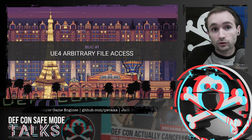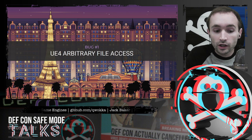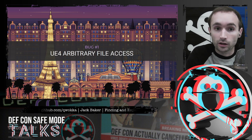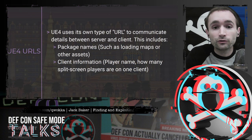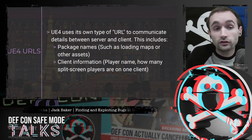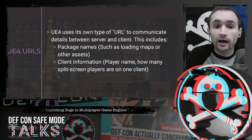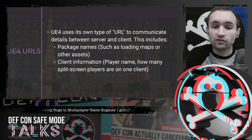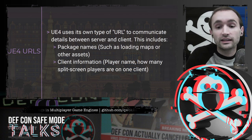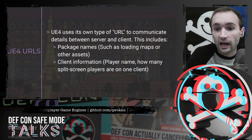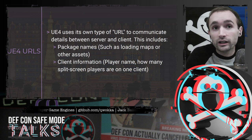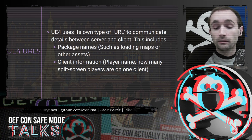Now let's look at our first bug — an Unreal Engine 4 file pathing bug. Unreal Engine uses its own type of URL to communicate details between server and client. This can include things like the server saying 'we're playing on this map, load these packages,' or a client saying 'I'm joining, my player name is Jack, and I'm joining with two other players on split screen.'